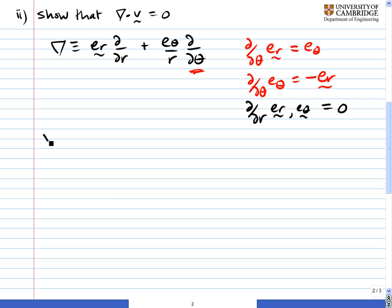So we need to expand out the expression for div v. So let's simply substitute in this expression for the del operator. It's e_r d by dr plus e_theta over r d by dθ. And it acts on the velocity vector v,